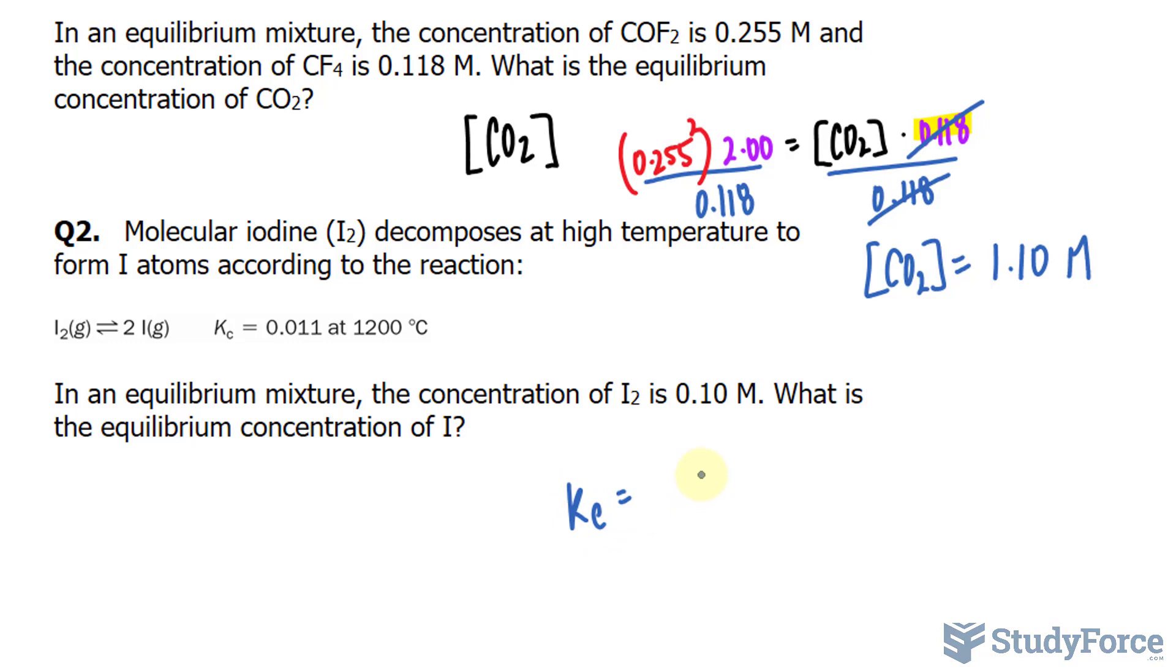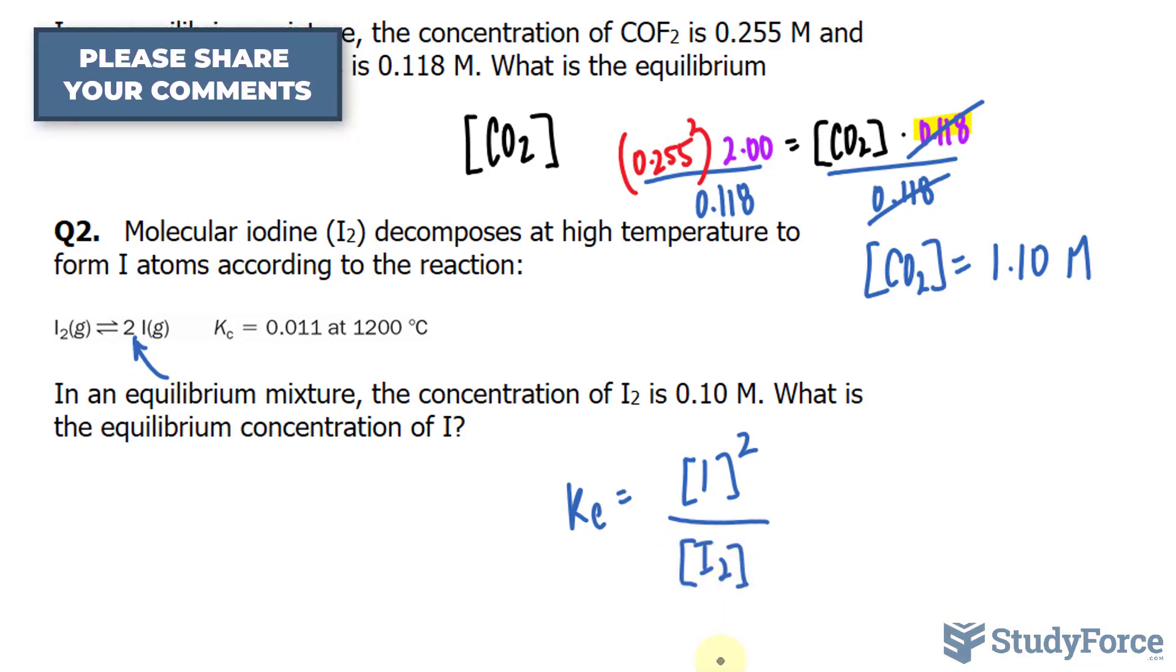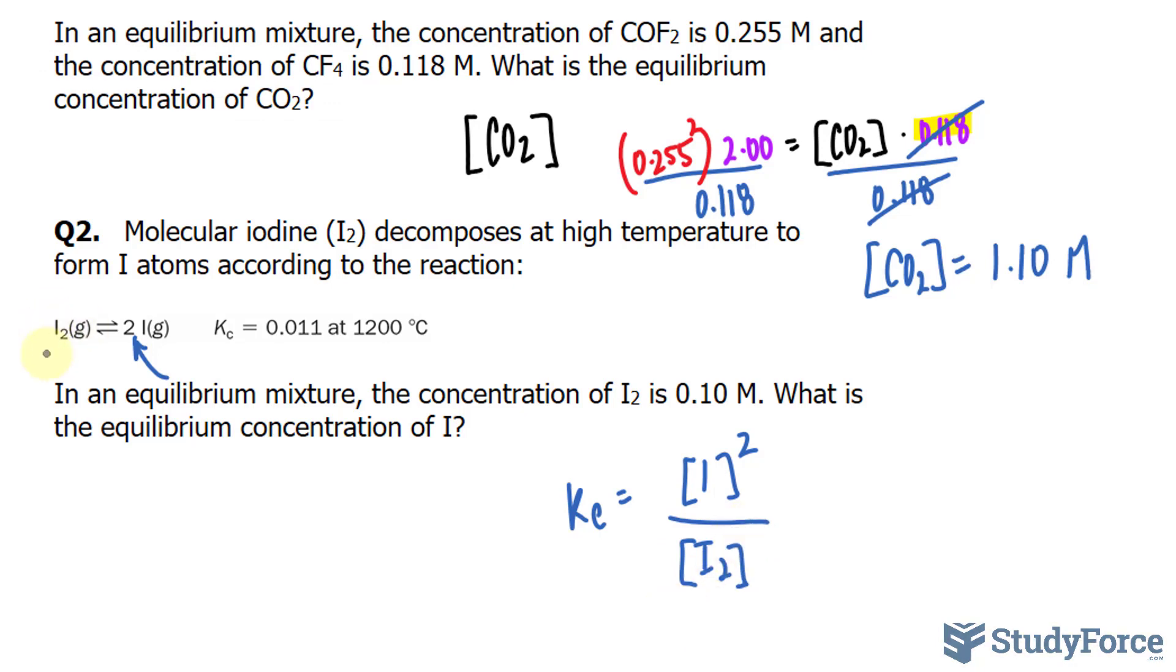We have Kc is equal to the concentration of iodine, and that's what we're looking for, over, and notice that we have to raise this to the power of two because of the coefficient, and the concentration of the diatomic version of iodine. And it's not being raised to any power because there's no number at the front. Substituting all the values that we have, so rather than Kc, we'll write down 0.011, and rather than this, I'll write in 0.10.